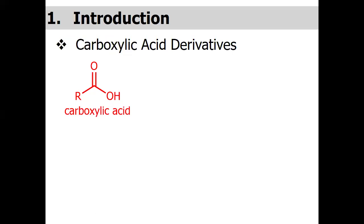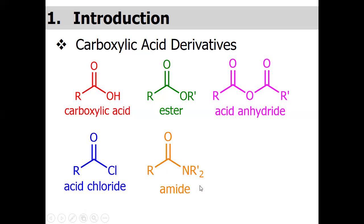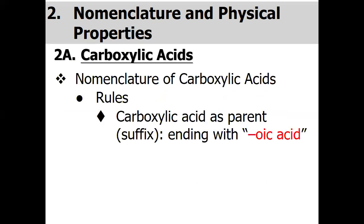This is the structure of carboxylic acid, which has a carbonyl group and an OH group. Once this OH is replaced by a variety of moieties, we have several derivatives. For example, if it is replaced by an alkoxy group we have an ester; by an acetyl group we have an acid anhydride; by a chloride group we have an acid chloride; by an amine group we have an amide. Another carboxylic acid derivative is the nitrile.